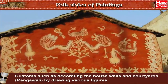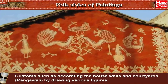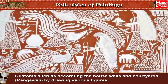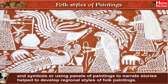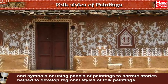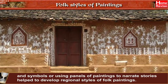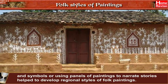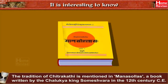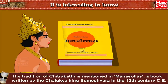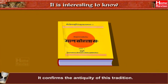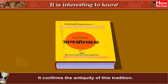Customs such as decorating house walls and courtyards — that is, Rangavali — by drawing various figures and symbols, or using panels of paintings to narrate stories, helped develop regional styles of folk painting. It is interesting to know that the tradition of Chitrakati is mentioned in Manasolasa, a book written by the Chalukya king Someshwara in the 12th century CE, confirming the antiquity of this tradition.